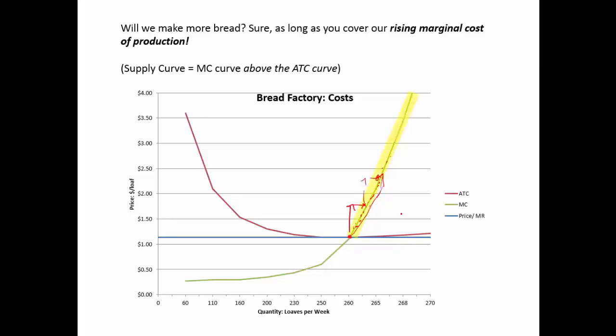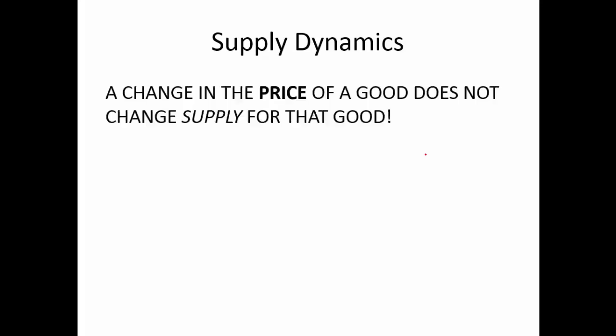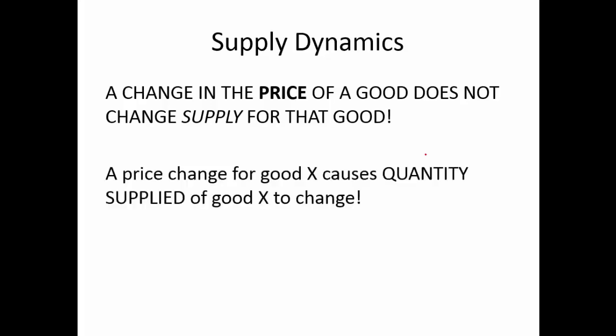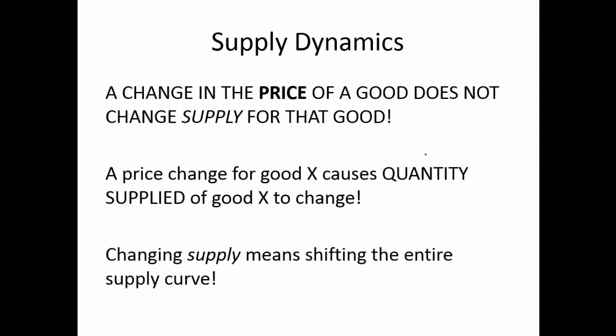The supply curve says how much producers will produce at various prices. I will produce more at higher prices because my costs are rising at the margin. So there's our upward-sloping supply curve. The supply dynamics are exactly parallel to demand dynamics. The change in the price of a good does not change supply — when the price changes, the quantity supplied changes. In order for the whole supply curve to change, we have to have a change in an underlying determinant of supply.